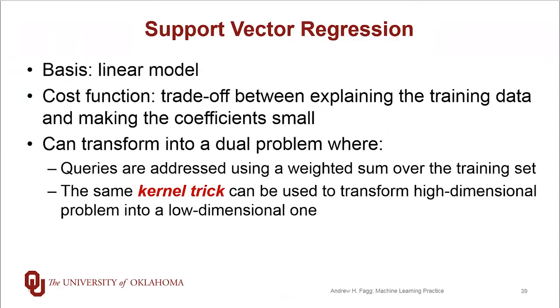The basis, just as in the classification scenario, is a linear model. The cost function that we're using ends up being a trade-off between explaining the training data that we have and trying to make the coefficients as small as possible. So it feels a lot like our ridge regression type of configuration.